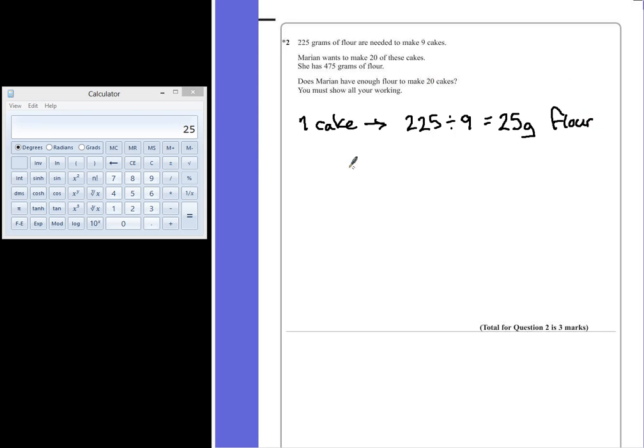Marion wants to make 20 of these cakes. So to make 20 cakes, we can multiply this value, 25 grams, by 20. So 25 times 20 is one of those ones that you can probably do without a calculator. If you are allowed to use it, why not? And that adds up to 500 grams.